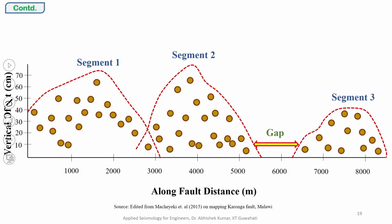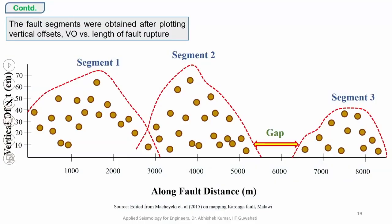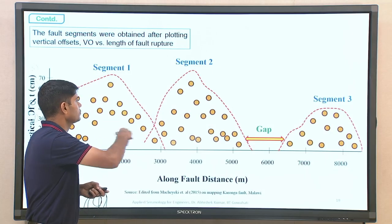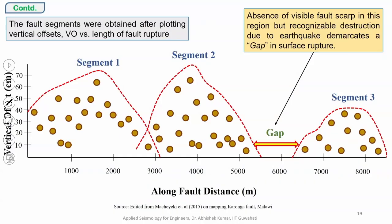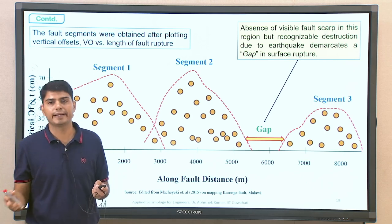During a particular earthquake there were lot of manifestations or undulations as part of surface manifestation, but because of construction activity or too much weathering, some portion of the surface manifestation may be gone. There can be a possibility of a gap in a particular region in terms of surface manifestations. You can see primarily three segments showing surface manifestation with segment 1, segment 2, and segment 3. The absence of visible fault curve in this region due to earthquake demarcates a gap in surface rupture which might be because of some recognizable or unrecognizable destruction.